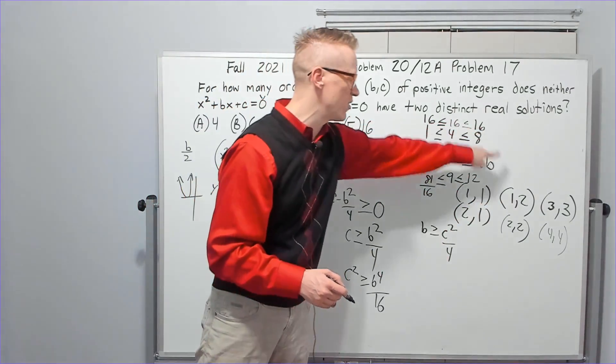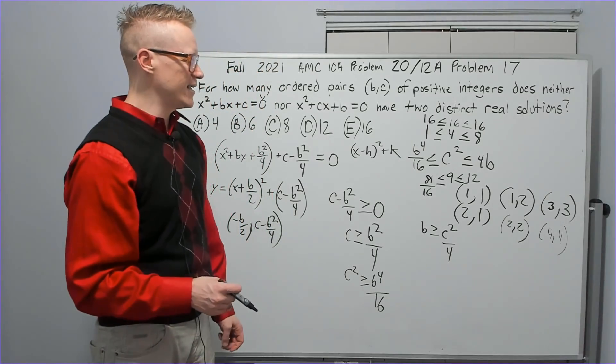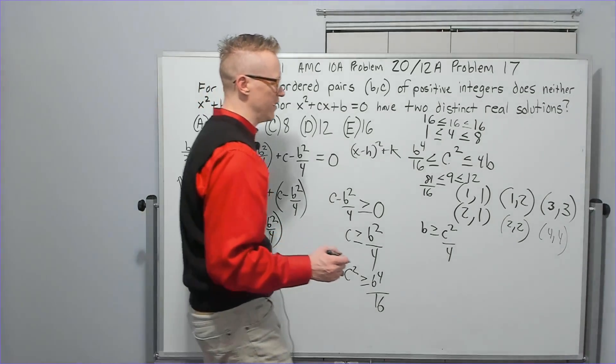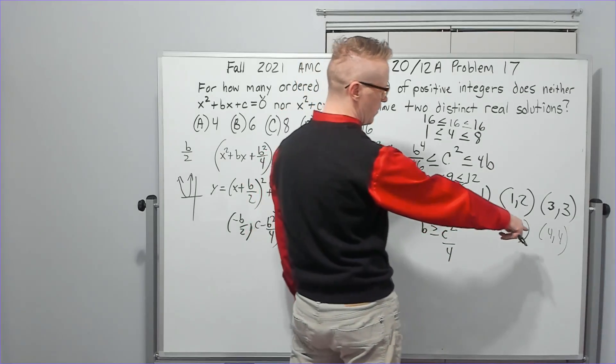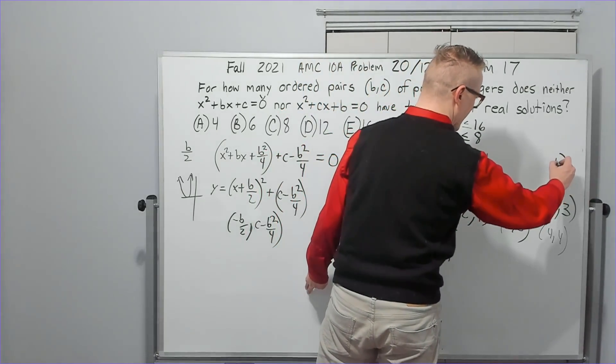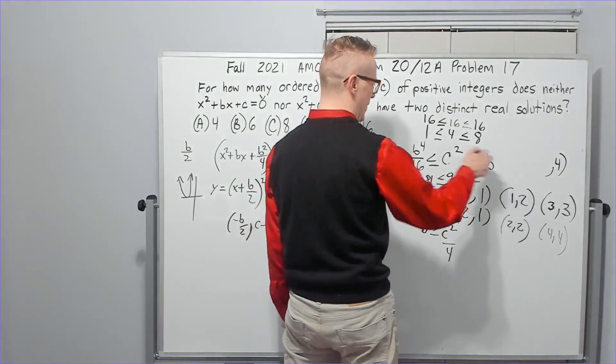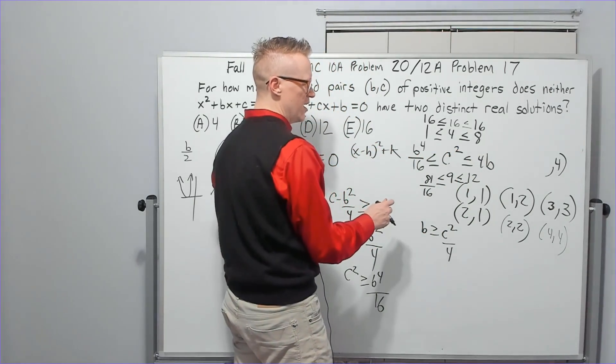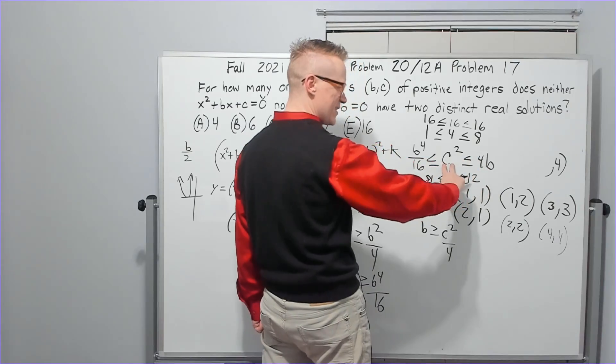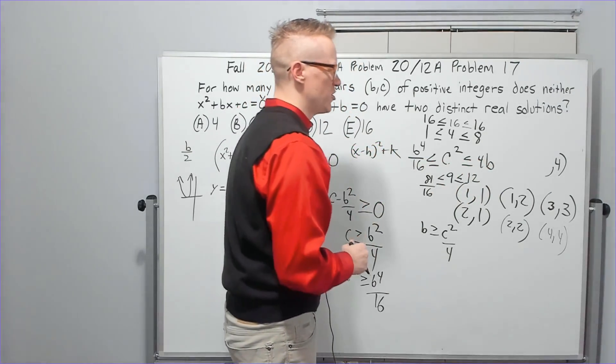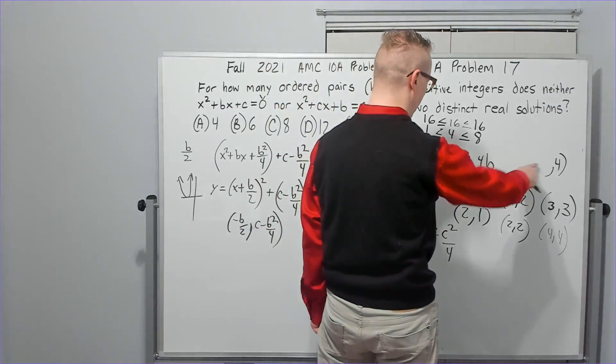But you also get the impression, since they're all equal, you're not going to get any other values that work. If I let you know, try 4 as the c value real quick, and if I let b be 3, would it work? No, because this would be 12, right? So I'd have 12 and 16 is not less than 12. So that wouldn't work. Could I let it be 5?